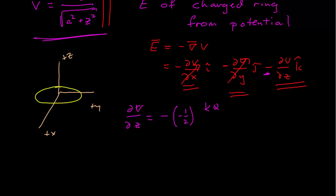We still have kQ, which are constants. And now the a squared plus z squared goes from negative one-half to negative three-halves. And then now chain rule: we differentiate the inside, which gives us two times z.